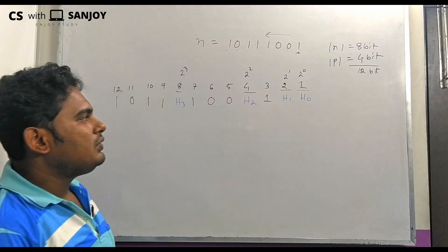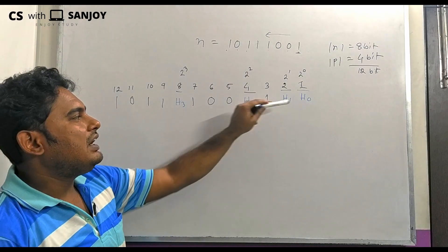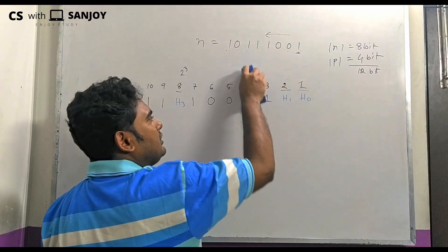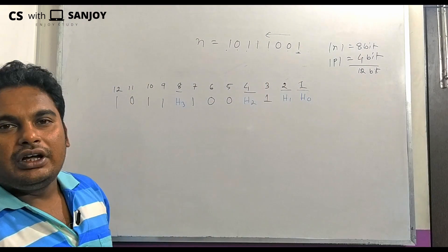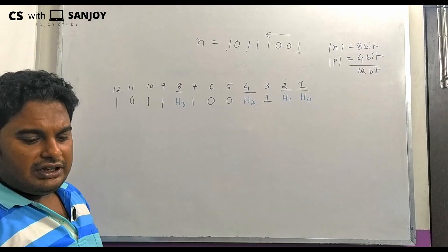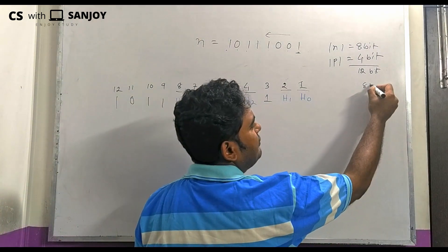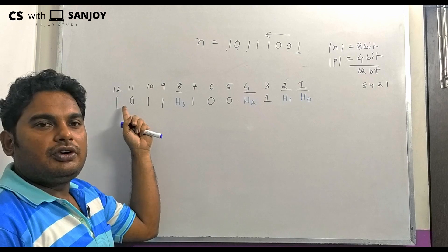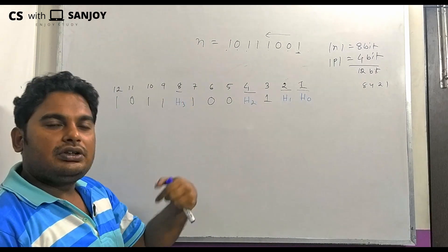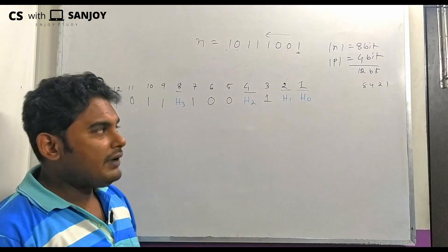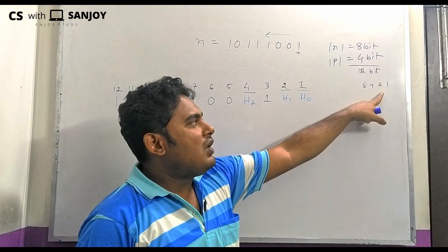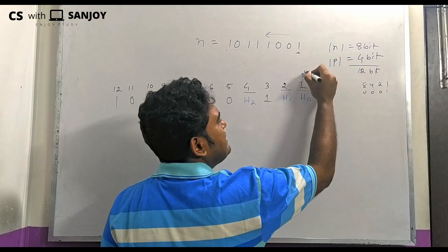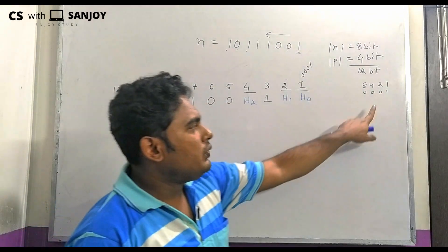Now we have to compute the values of the Hamming bits H0, H1, H2, H3. To do this, we write the binary representations of positions 1 through 12 using columns 8, 4, 2, 1. For example, position 1 is 0001, position 2 is 0010, position 3 is 0011, position 4 is 0100, and so on.